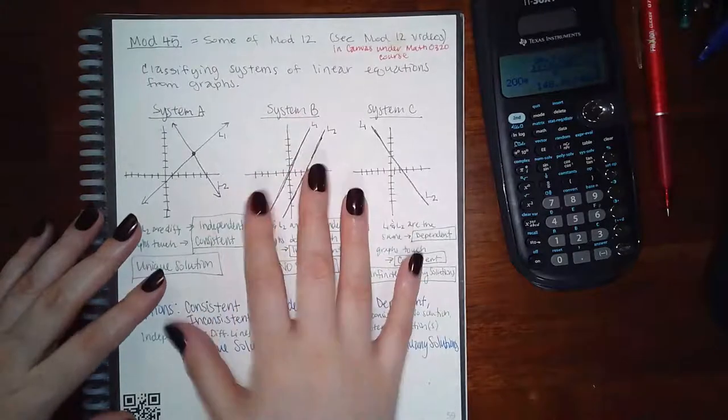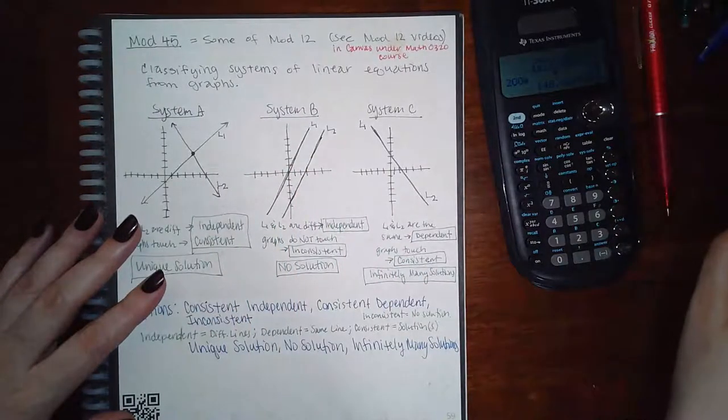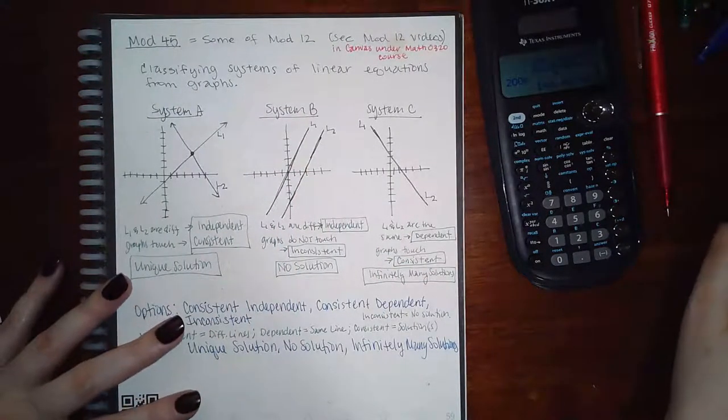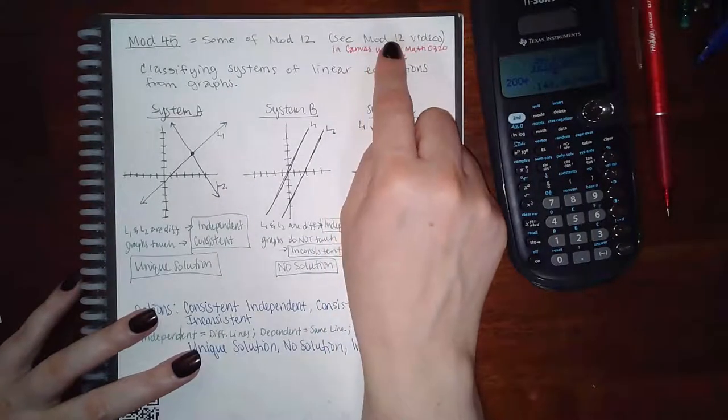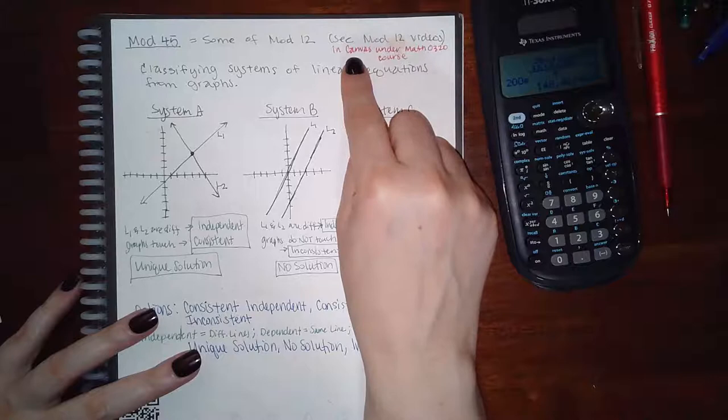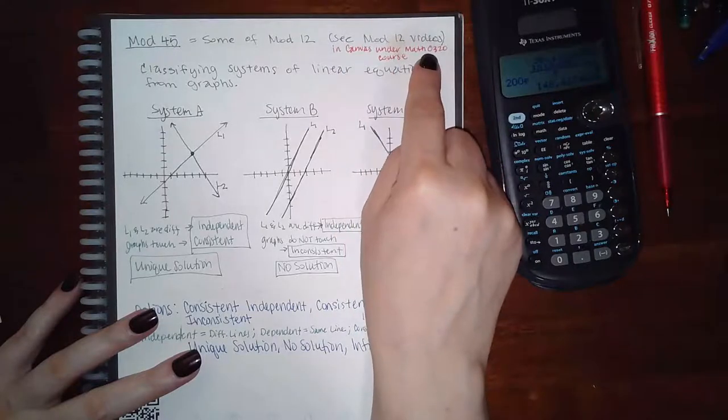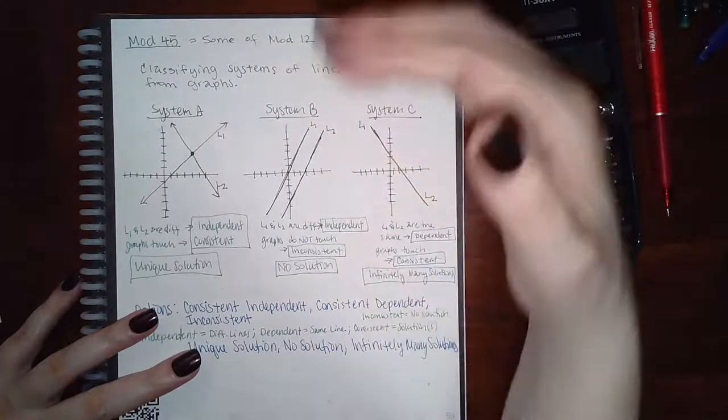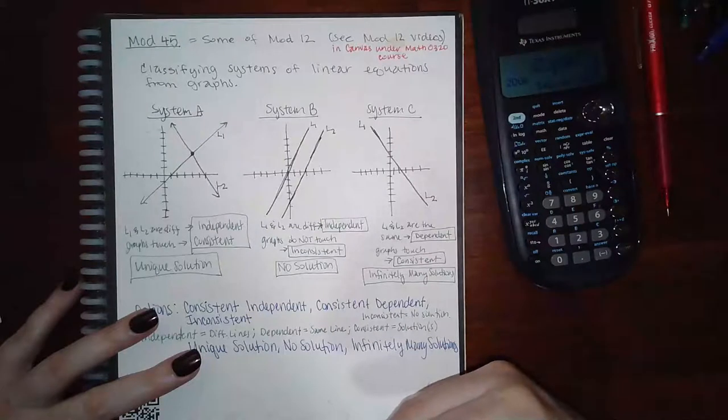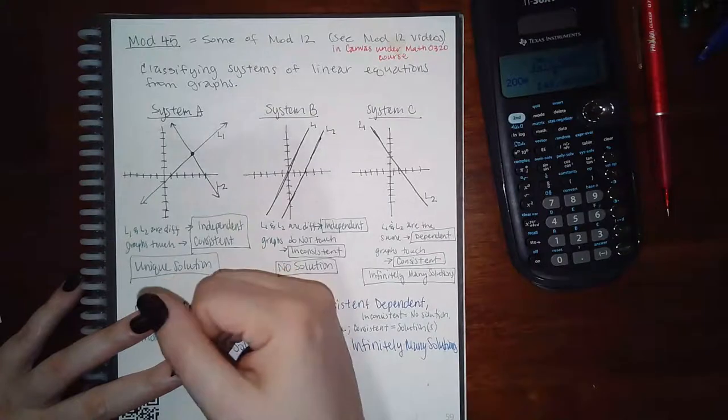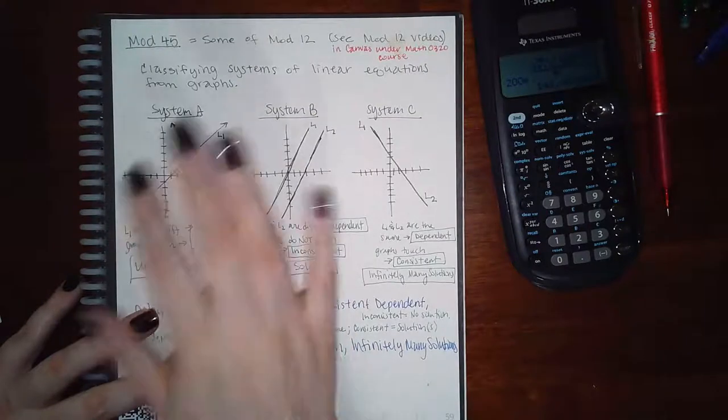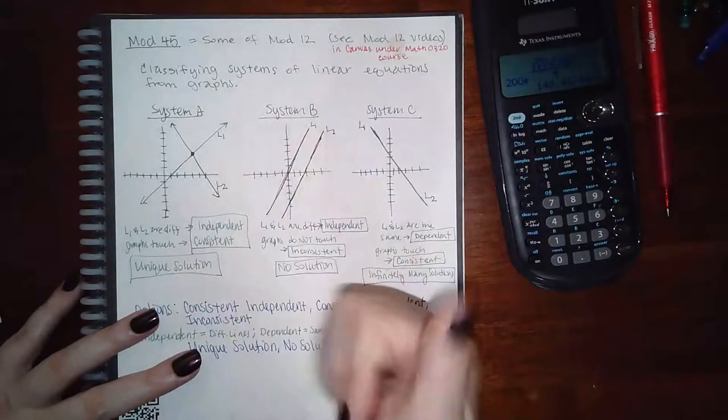In order to access Module 12 videos, go into Canvas and go to the Math 320 course, and then scroll in that home page so that you can find the video for Module 12. If you're missing anything from Module 45, those topics will be in that Module 12 video. Those will also be the same for Module 46 and Module 47.